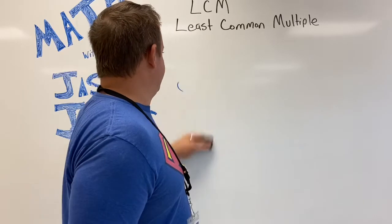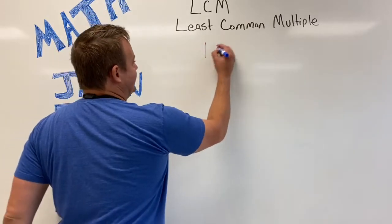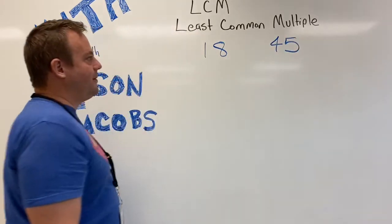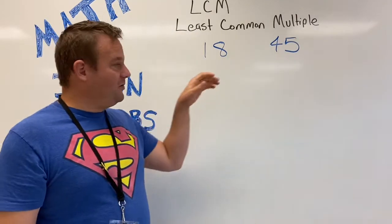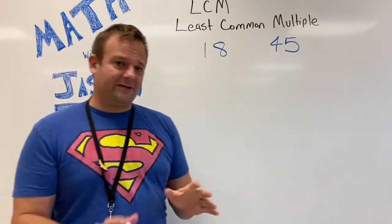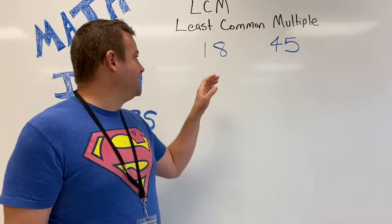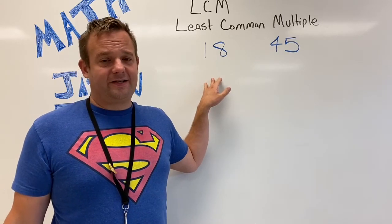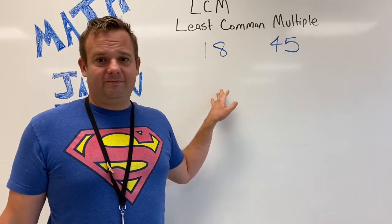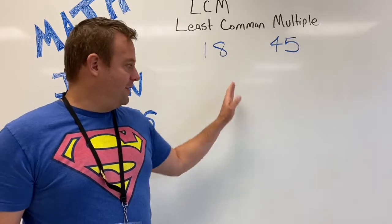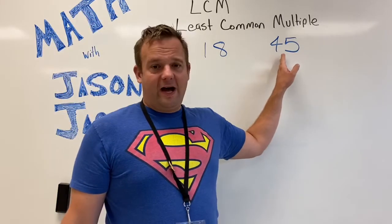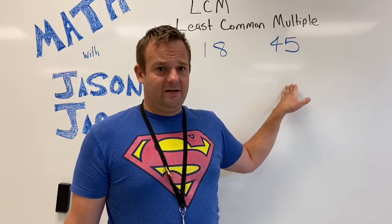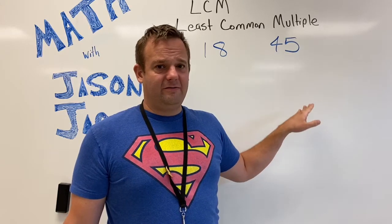I'm going to give you guys an example now to do. Let's explore 18 and 45. Find the least common multiple of 18 and 45. Now could you imagine listing all these multiples? 18 times 1 is 18, 18 times 2 is 36, 18 times 3... I don't know, I'd have to like do it out, but it would go on and on. 45 times 1 is 45, 45 times 2 is 90, 45 times 3, you know.